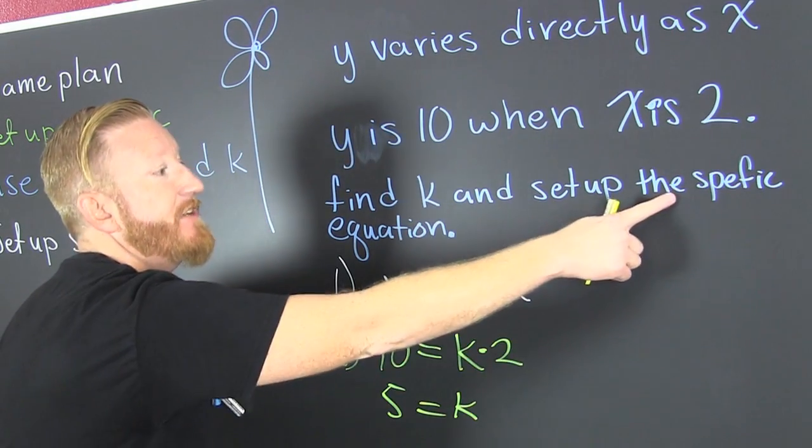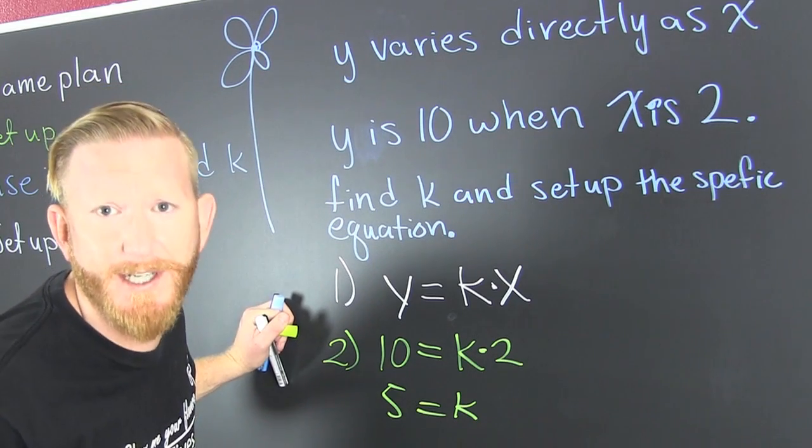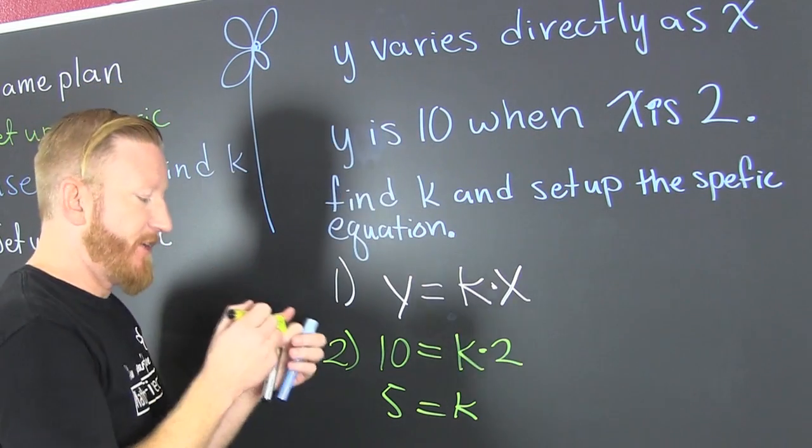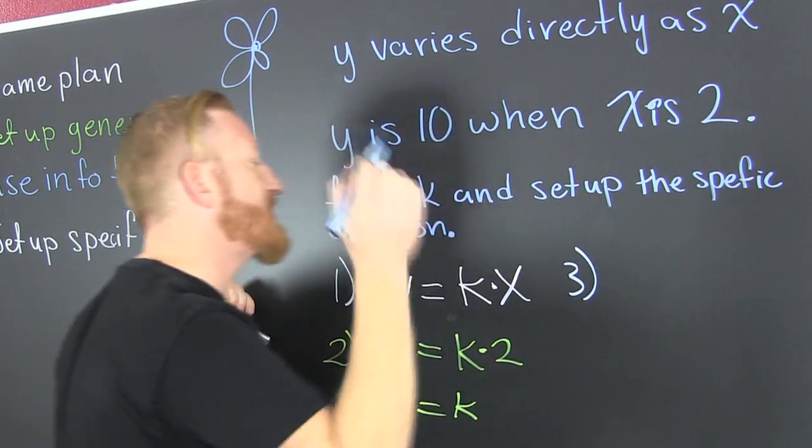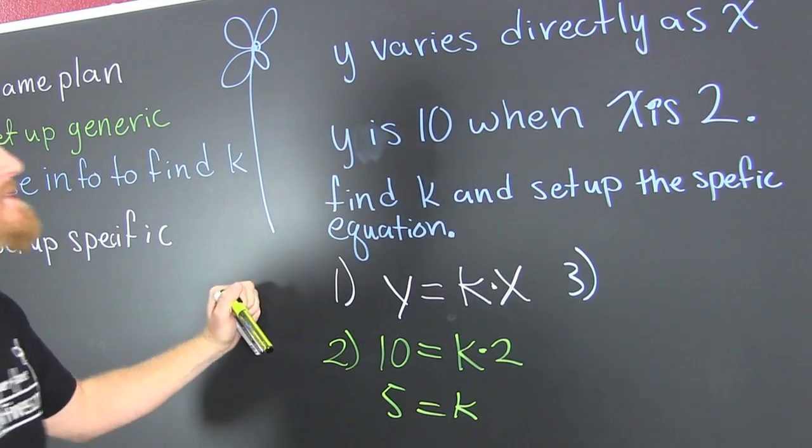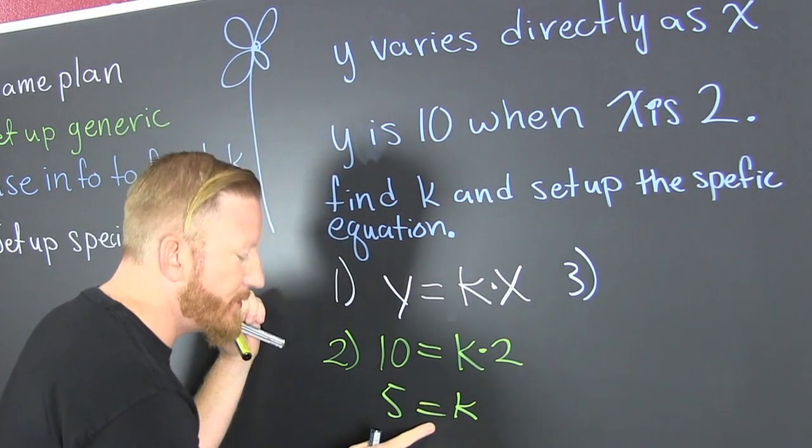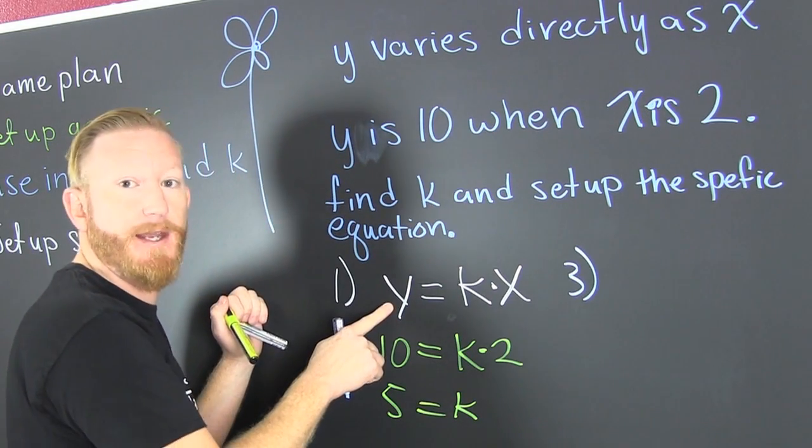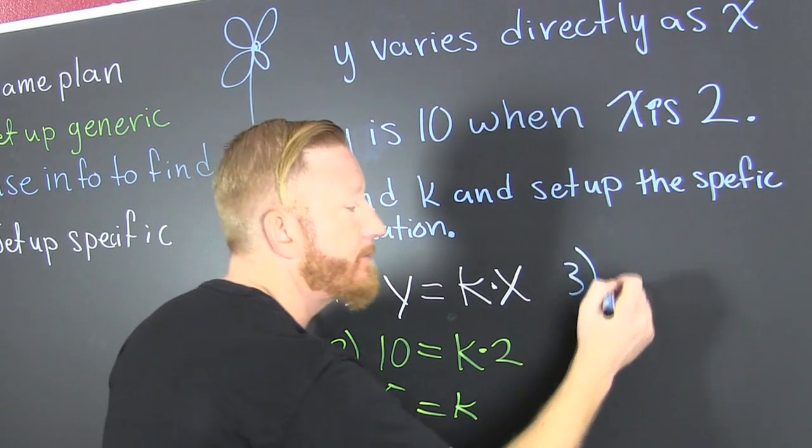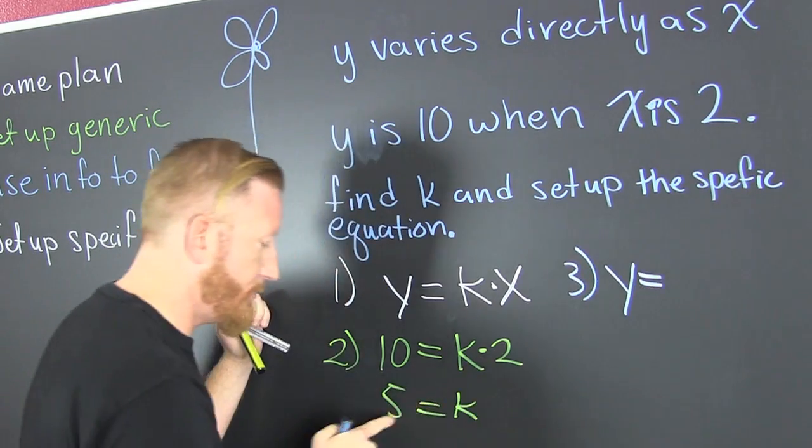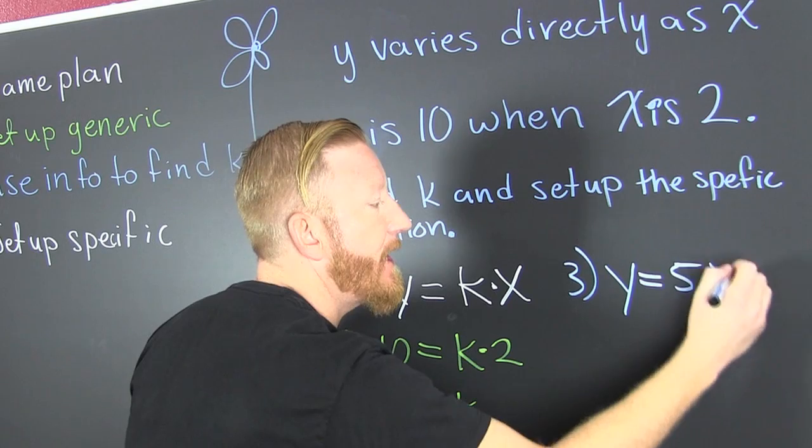Now we set up the specific. That is really not how to spell specific. I'm not real specific when I spell things. So this is step 3. We're about to spell the end of this problem. We're setting up the specific equation. That's when we take that k and we put it right there to make one that's relevant to that problem. So then y is equal to 5x.